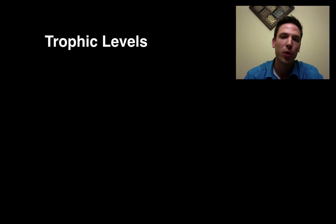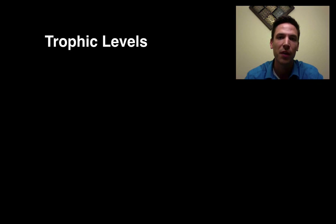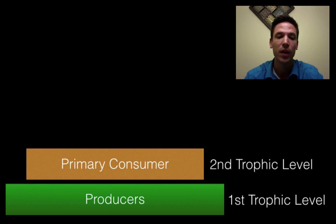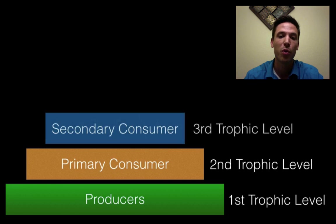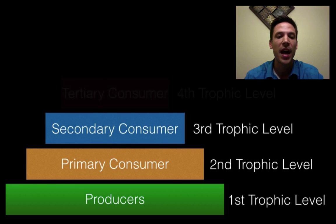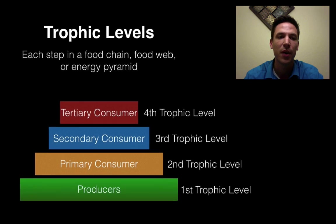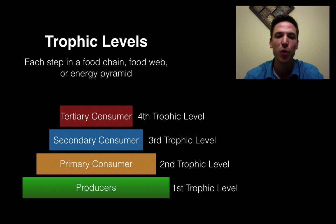Aside from talking about consumers, producers, or decomposers, we also have another term called trophic levels. Think of it as a level of a building. Our producers are always at the very bottom — this is where the energy starts — so producers are our first trophic level. The ones that eat the producers, our primary consumers, are the second trophic level. Secondary consumers are the third trophic level, and tertiary consumers are the fourth trophic level. A trophic level is each step in a food chain, food web, or energy pyramid.